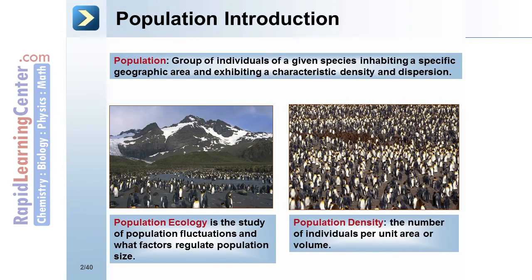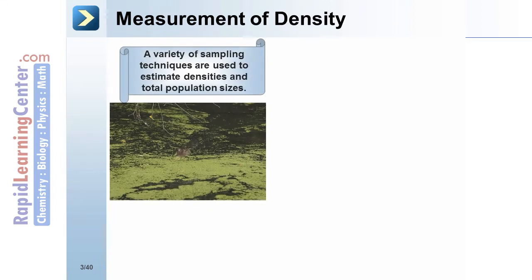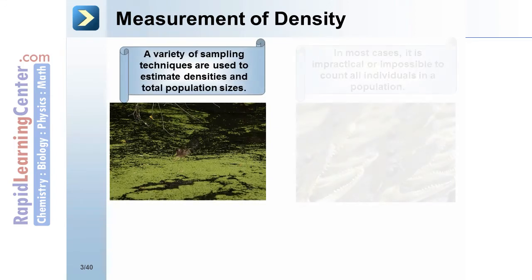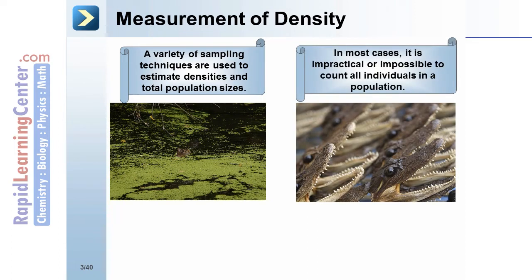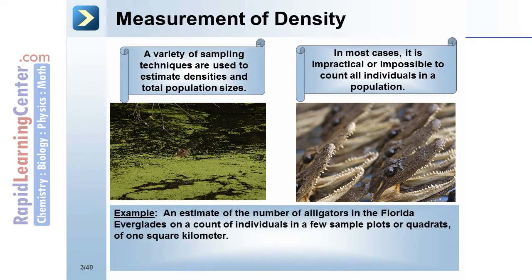Population density is the number of individuals per unit area or volume. A variety of sampling techniques are used to estimate densities and total population sizes. In most cases it is impractical or impossible to count all the individuals in a population.